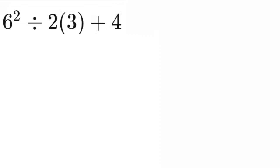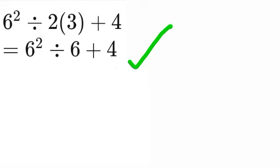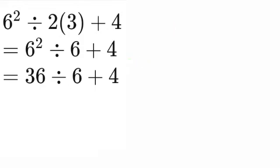We will solve this sum two different ways. This is our sum: 6² ÷ 2(3) + 4. First method: 6² ÷ 6 + 4. Six squared is 36, divided by 6 plus 4, which equals 10.